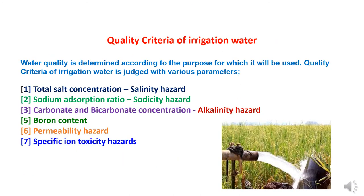Quality criteria of irrigation water. Water quality criteria will depend on kind of use of water. In case of irrigation water, the various parameters used are: total salt concentration which refers to salinity hazards, sodium adsorption ratio SAR which refers to sodicity hazard, carbonate and bicarbonate concentration for alkalinity hazards, boron content, permeability hazards, and specific ion toxicity hazards. These parameters decide the quality of irrigation water.